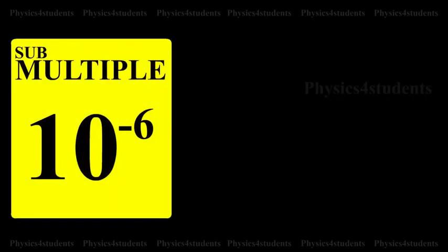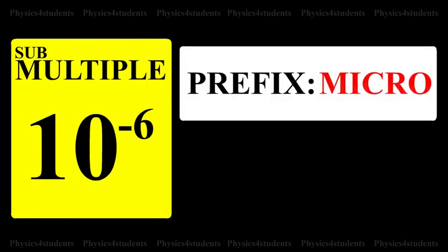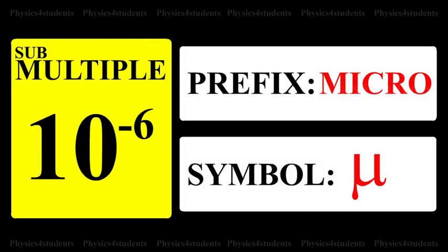Submultiple is 10 raised to minus 6: prefix is Micro, symbol is Mu.